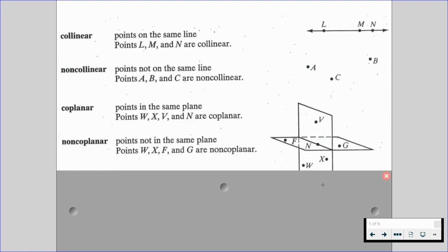We have coplanar and non-collinear. Points in the same plane describe the phrase coplanar. Points W, X, V, and N are coplanar. They're in the same plane.